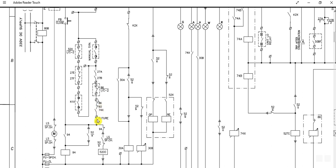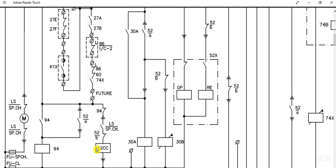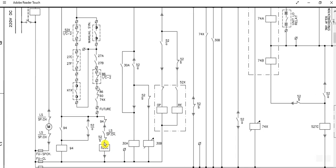If everything is okay, it comes to the spring charge limit switch. Then the closing control supply healthiness check. Then 52CC — where 52 is the breaker and CC is the closing coil — so this is the circuit breaker closing coil. This coil will be energized, and the 52A normally open contact will be closed. In this way the 94 anti-pumping relay will be energized. This is the remote energization path to close the circuit breaker and energize the 52CC closing coil.